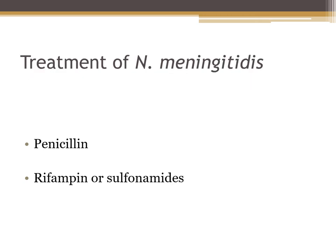The treatment for Neisseria meningitidis is either penicillin, rifampin, or the sulfonamide drugs. Rifampin or sulfa drugs are often given prophylactically if you've been exposed to the disease. There is a vaccine available for Neisseria meningitidis that protects the host from serotype B, which is the most virulent and encapsulated strain.